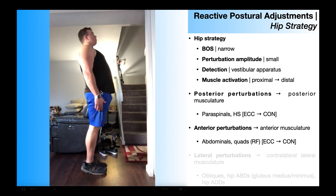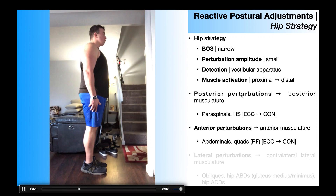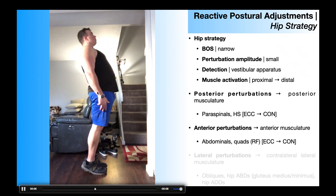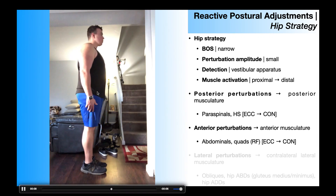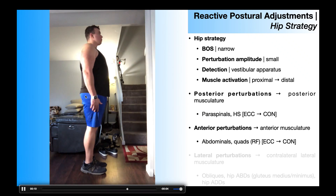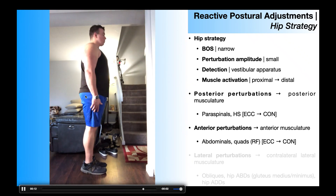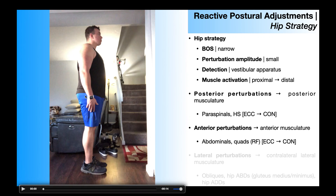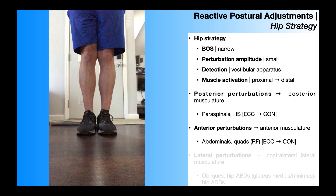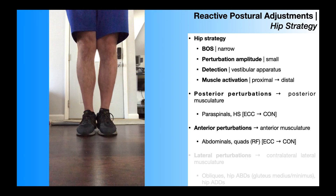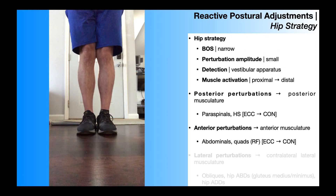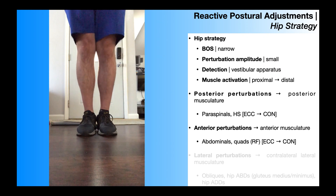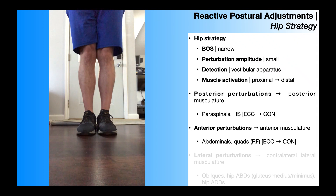For this hip strategy versus the one induced by the posterior directed perturbation, we have a smaller movement overall. That's because this involves hip extension and lumbar extension — two movements that have smaller ranges of motion than their corresponding flexion movements present in the posterior directed perturbation. Again, the base of support is narrow; if it were wider, assuming a small perturbation, you would more likely induce an ankle strategy than a hip strategy.